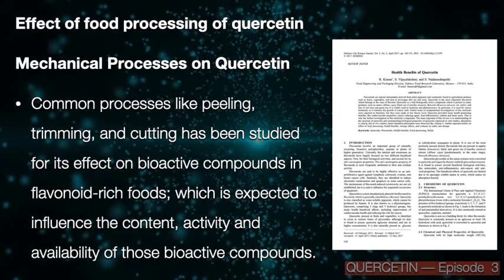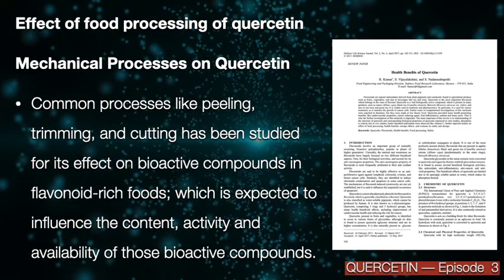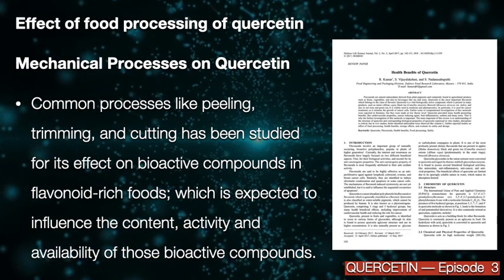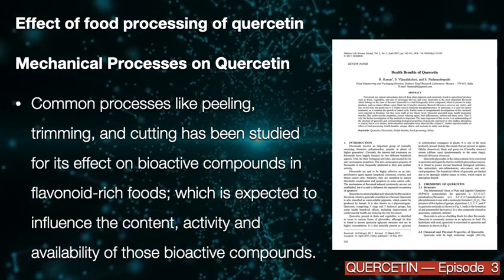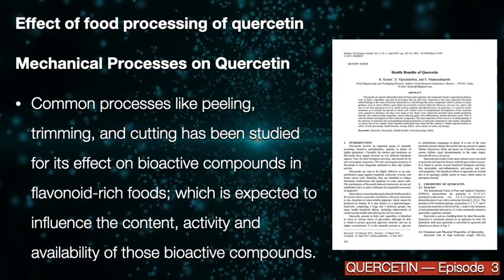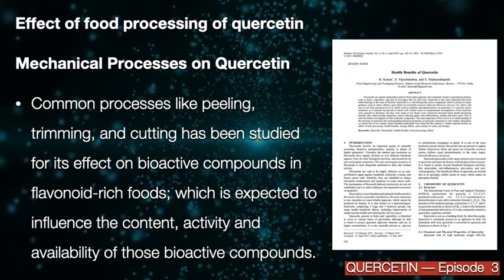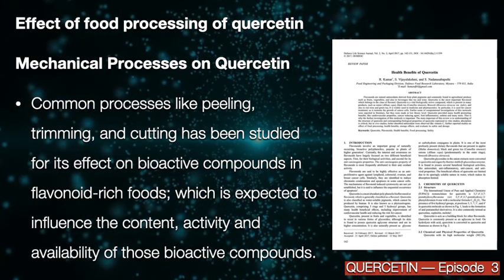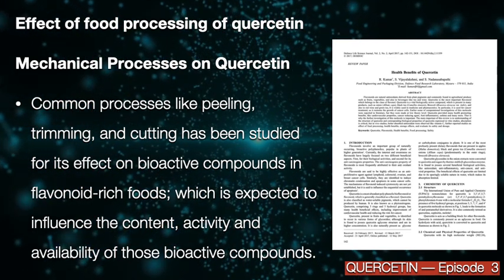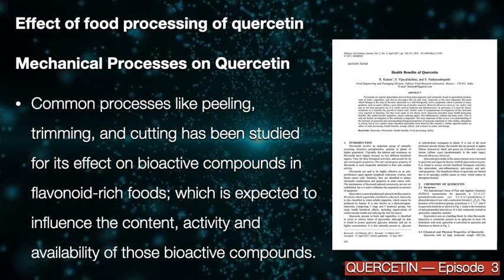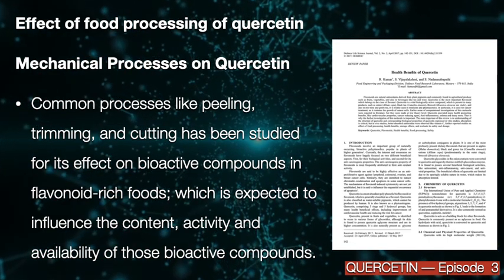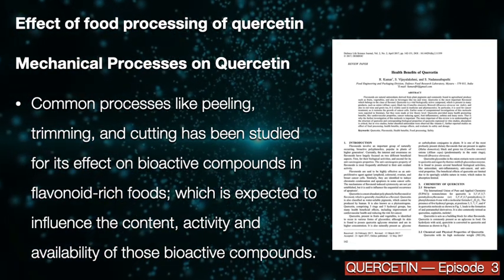Mechanical processes on quercetin. Common processes like peeling, trimming, and cutting have been studied for their effect on bioactive compounds in flavonoid-rich foods, which is expected to influence the content, activity, and availability of those bioactive compounds.